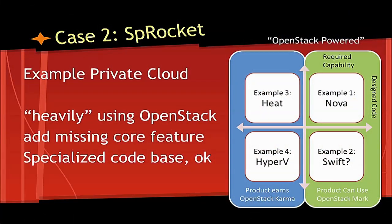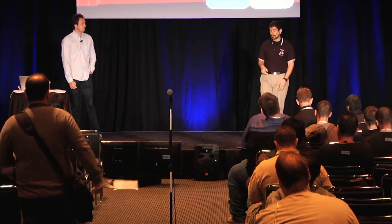Sprocket is a private cloud using the OpenStack code. They chose not to implement key pairs — they have to add that. They don't implement Swift; they use Ceph, which is pretty common in private cloud implementations. We're currently discussing whether Swift has designated code or not. If Swift has no designated code but Ceph can pass the Swift API tests, that's fine. If it's 100% designated, then you need to ship Swift. OpenStack projects should have a degree of designated code, and we'll eventually have a target percentage.